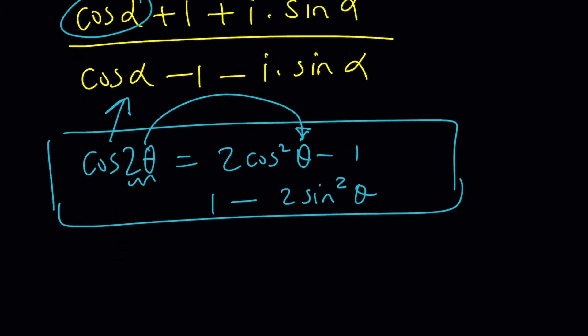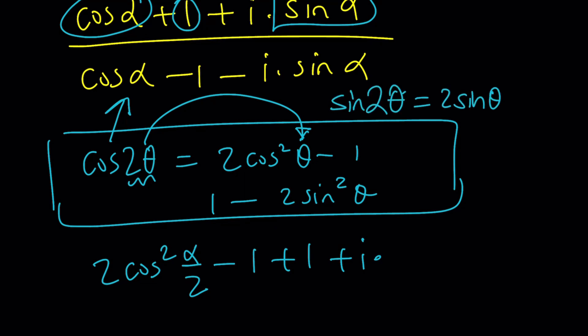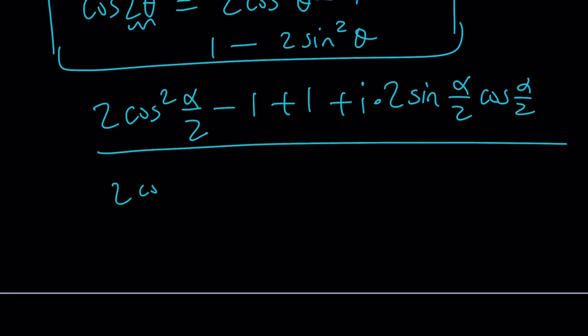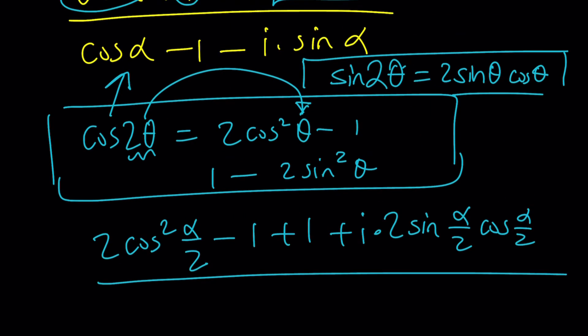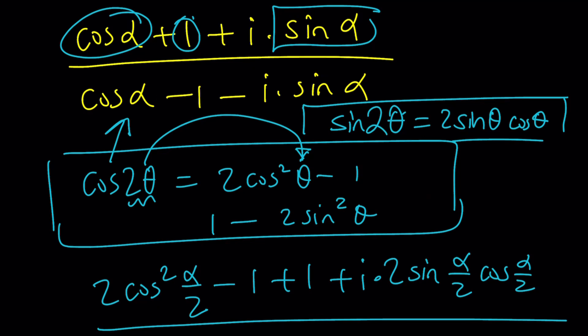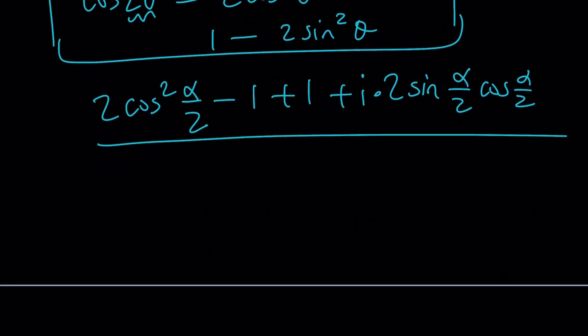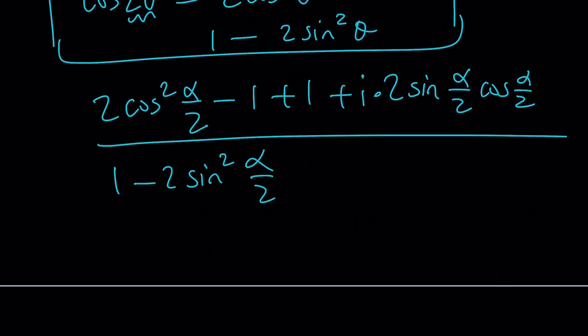I'm going to consider the following: cosine of 2 theta is 2 cosine squared theta minus 1, or I can write it as 1 minus 2 sine squared theta. I could also write it as cosine squared minus sine squared, but these two are going to be more helpful in our case. In this case, alpha is 2 theta, so that gives us the half angle. We're going to use alpha over 2 for that.